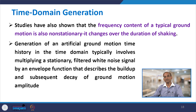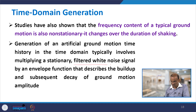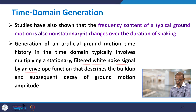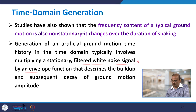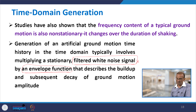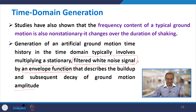Generation of an artificial ground motion time series in the time domain typically involves multiplying a stationary filtered white noise signal by an envelope function that describes the buildup and subsequent decay of ground motion amplitude. The product of these two — filtered white noise signal and envelope function — gives the artificial ground motion.